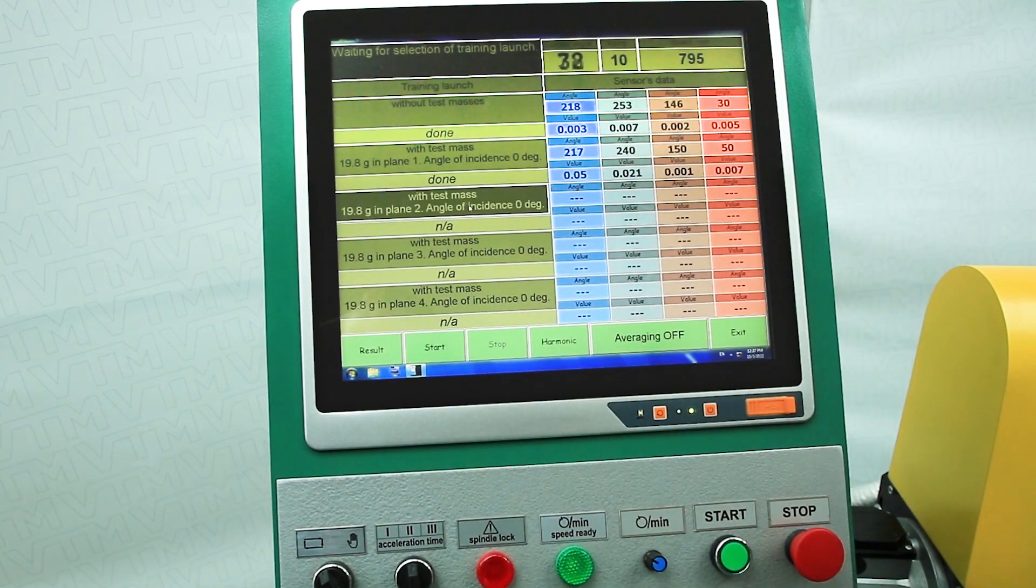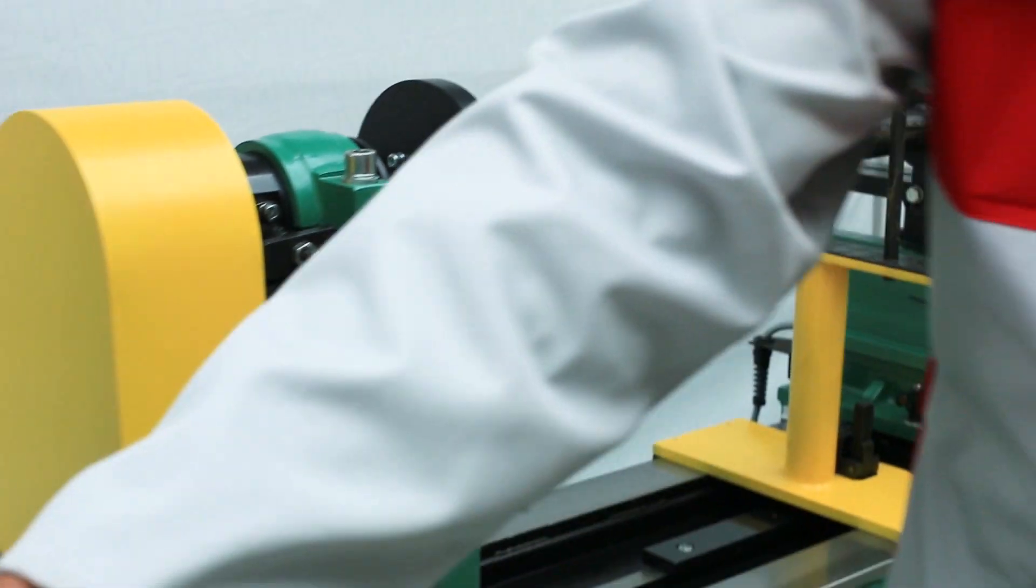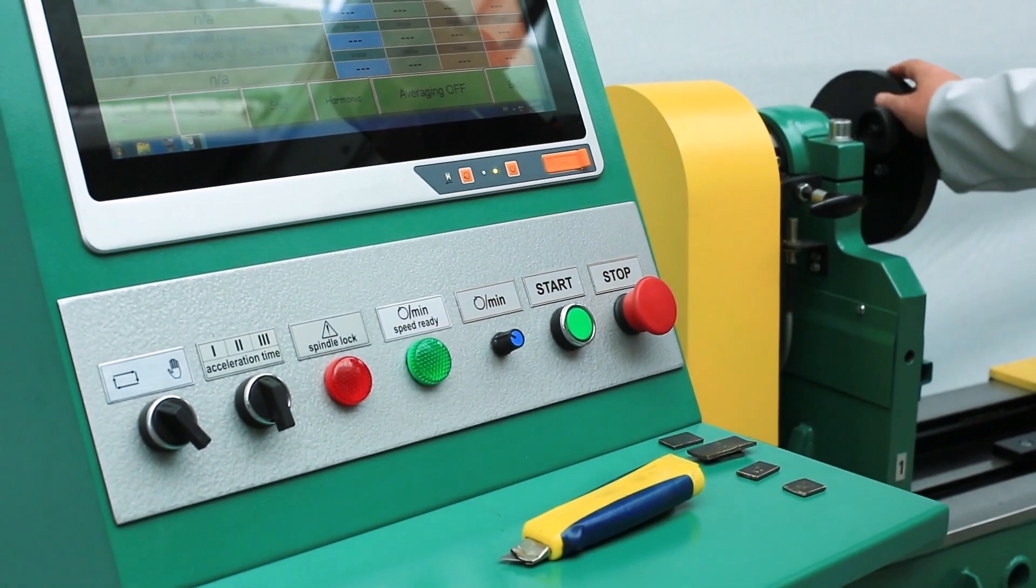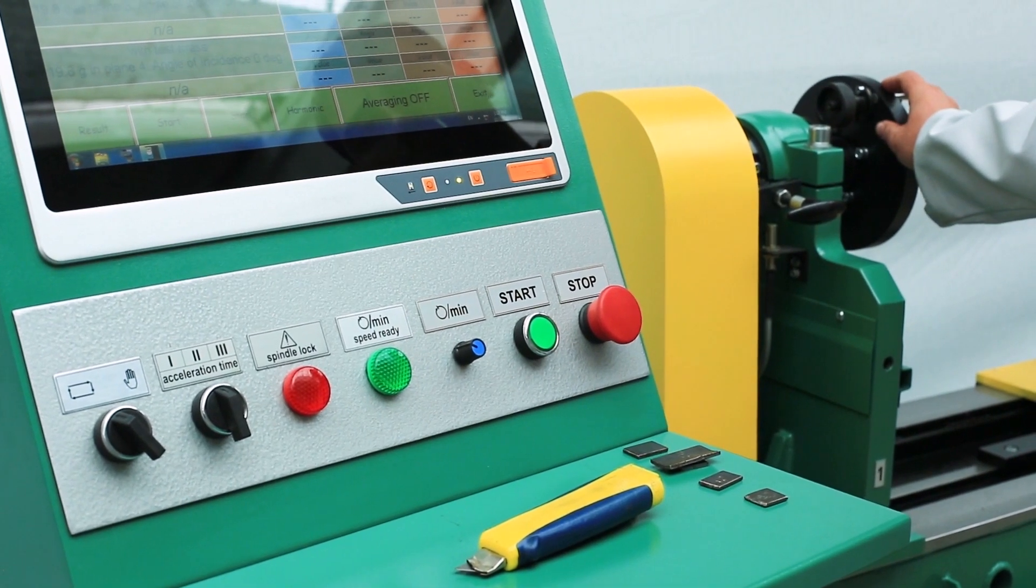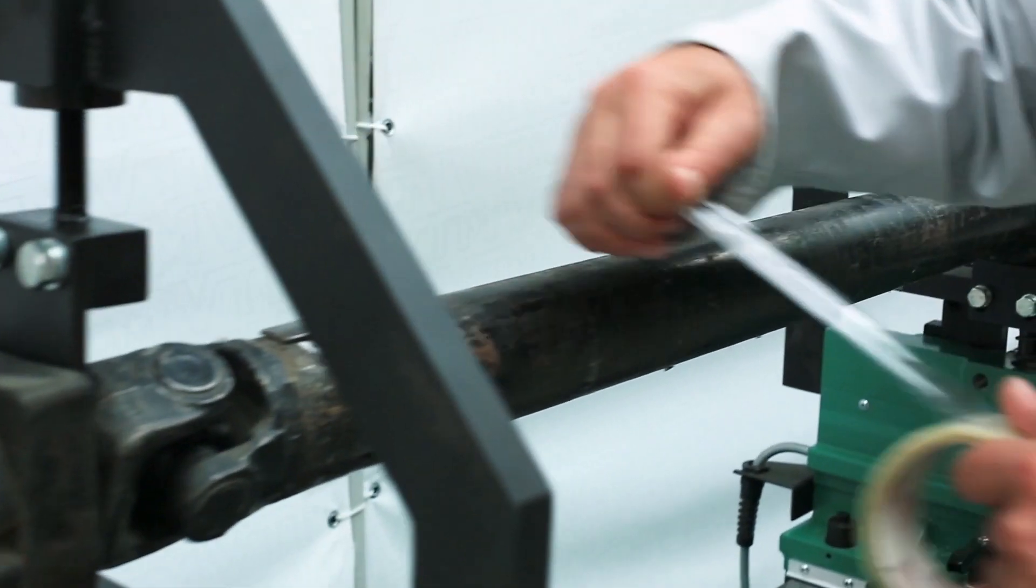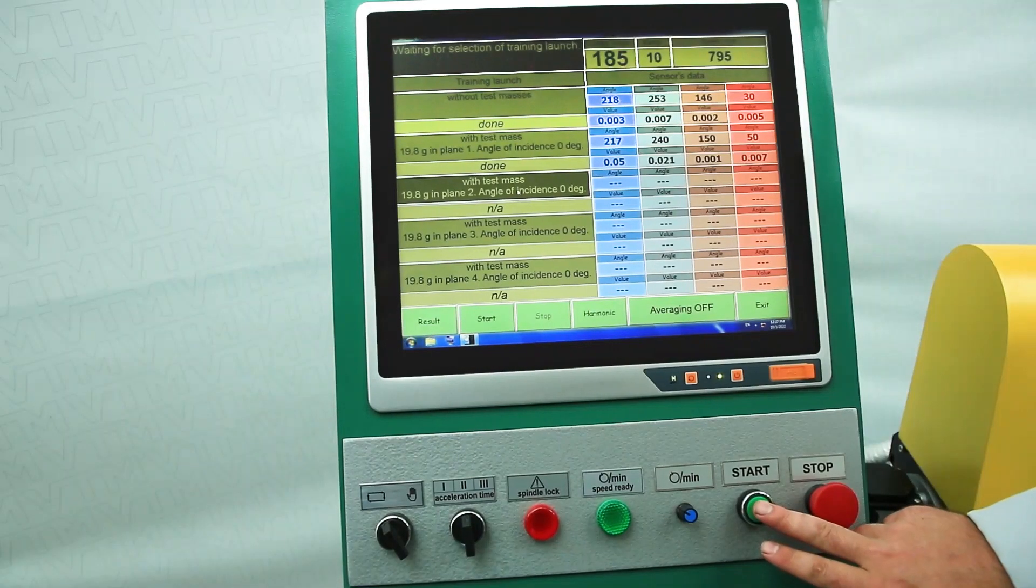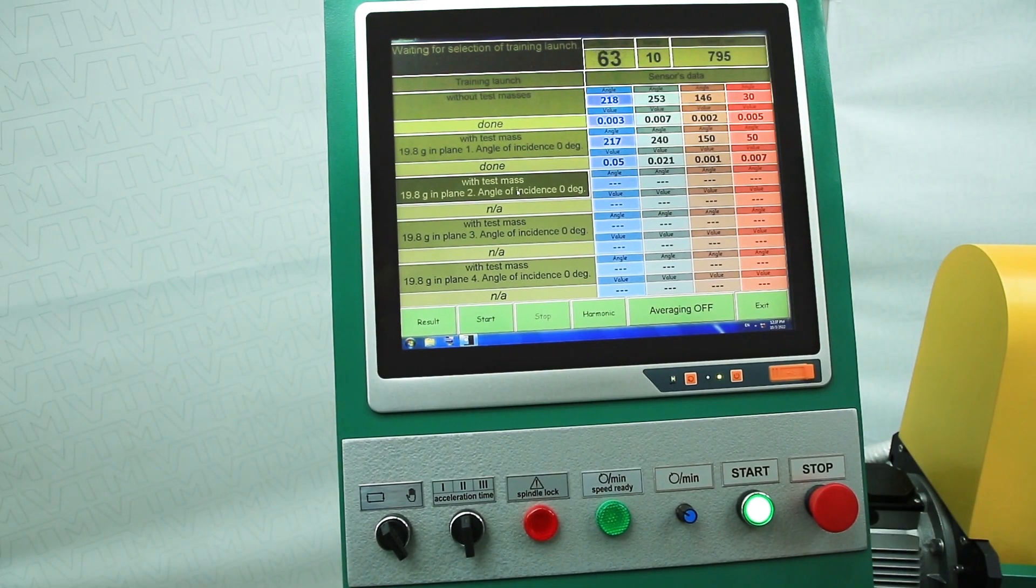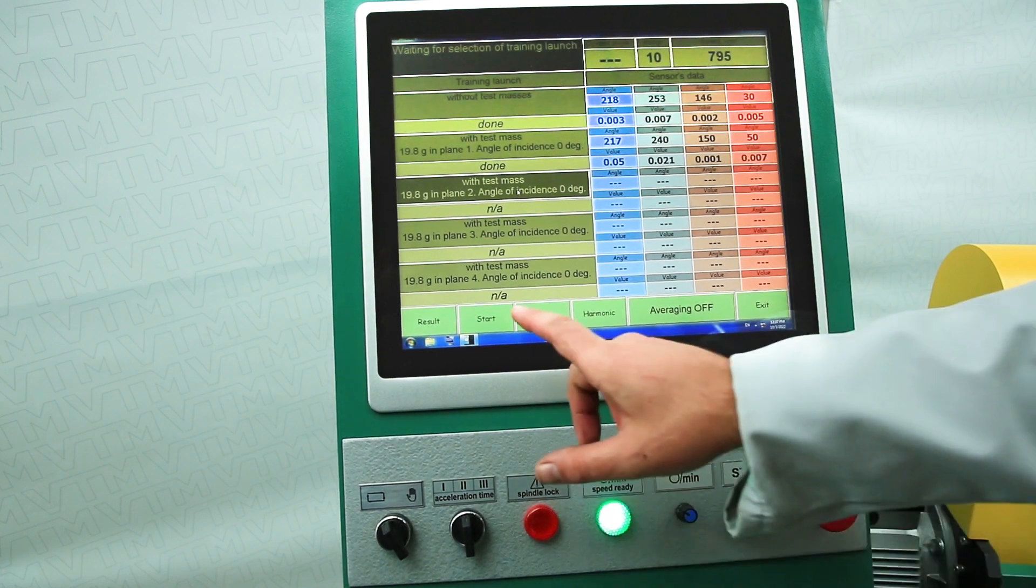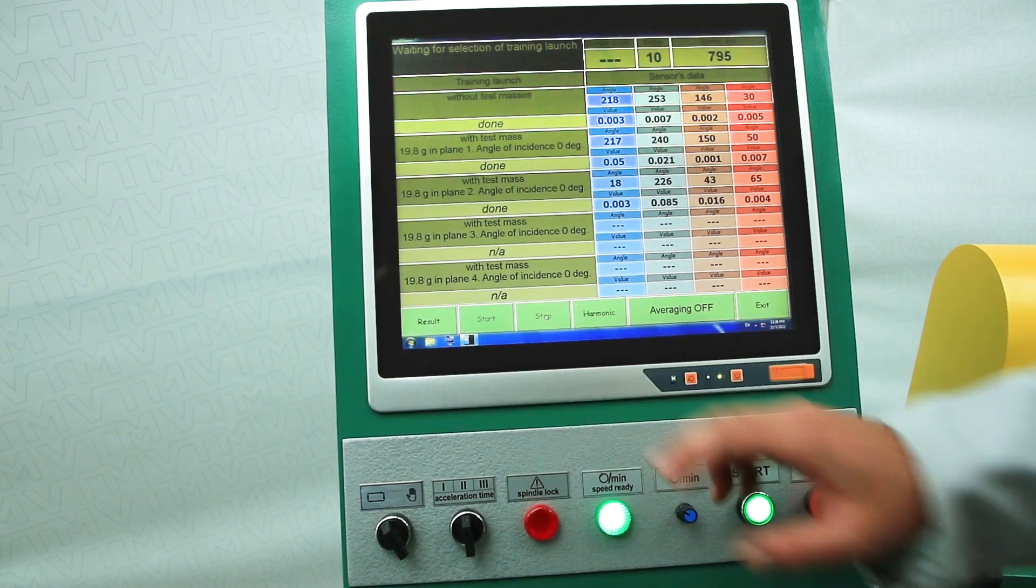Select the launch with the load on the second plane. We remove the weight from the first plane, turn the angle to zero degrees. We install the weight on the second plane vertically from above, fixed. Press the start rotation button, wait until the rotation speed is reached and the measurement starts. Then stop measuring and stop rotating.